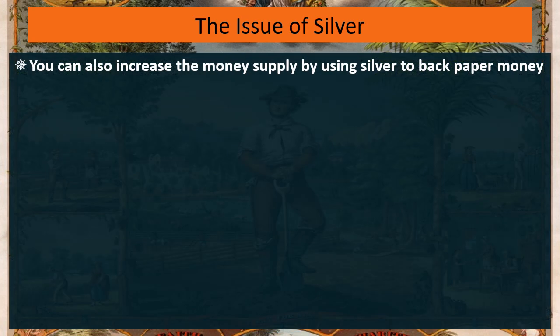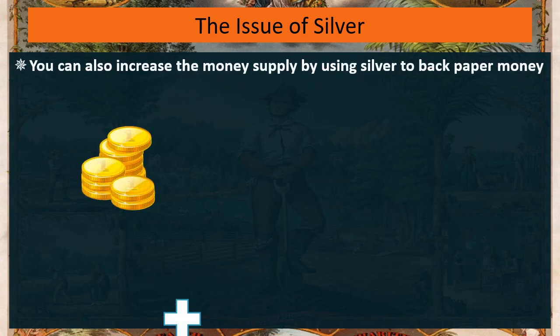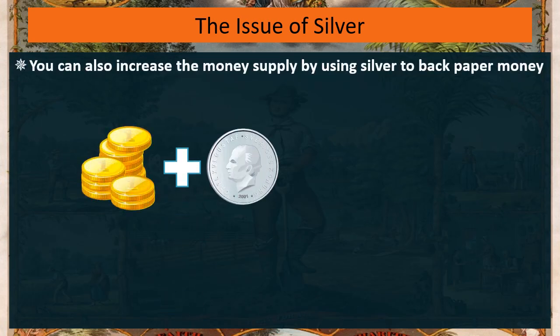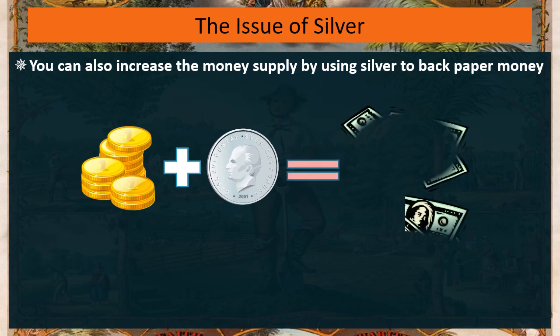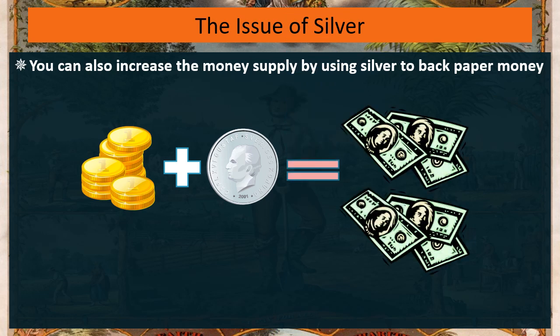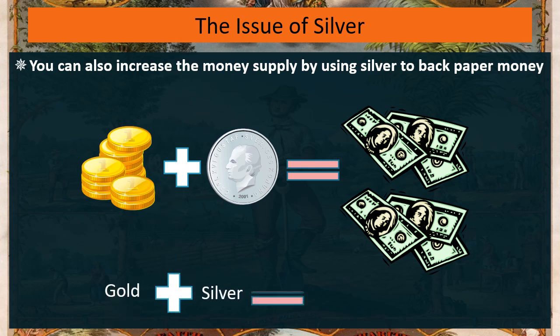If that's the case, then you can have silver and gold and it will get you more money in your economy, since you can use this other metal to print more paper.